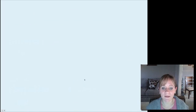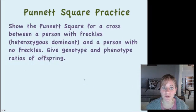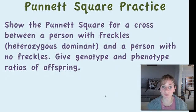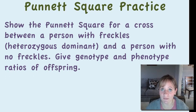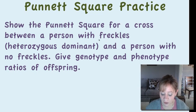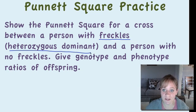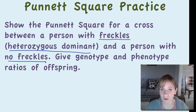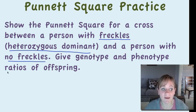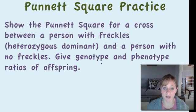Here's an example for you to do in your notes. Show the Punnett square for a cross between a person with freckles who is heterozygous dominant — having freckles is the dominant phenotype — and a person with no freckles. Figure out the no-freckles genotype, show the Punnett square, and give both the genotype and phenotype ratios of the offspring.